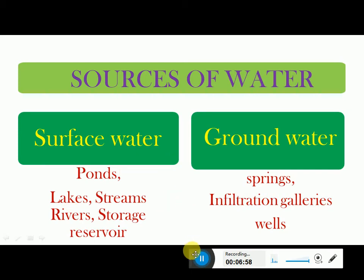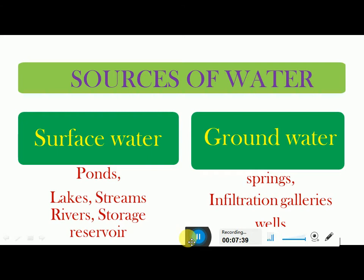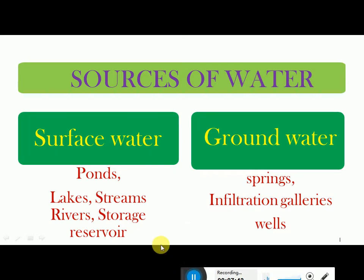Sources of water are broadly classified into two types: surface water and groundwater. Surface water is the water formed on the surface of the earth — rivers, ponds, natural streams, and storage reservoirs. Artificial lakes are constructed to store water for supplying to communities. We may extract water through rivers or reservoirs and store it, or use dams as storage structures, from which water can be supplied to consumers through a proper water supply scheme.